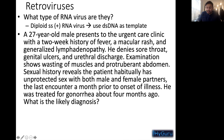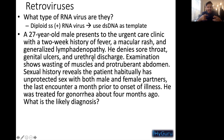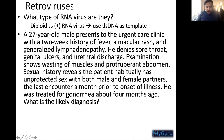Anytime you see generalized lymphadenopathy with these symptoms, it's nonspecific — you're really worried about HIV or some sort of malignancy. He also has sore throat, genital ulcers, and urethral discharge. In this scenario, he doesn't have any active STI. Exam shows wasting of muscles and a protuberant abdomen, indicating cachexia. Remember TNF-alpha gives you that cachexia because it's a long-term thing. Sexual history essentially makes him high risk, and he was treated for gonorrhea.